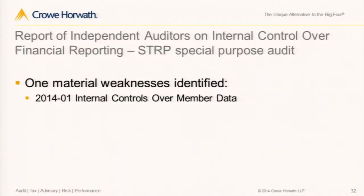There is one more deliverable: because the additional STRIP schedules were audited under government auditing standards, a separate report on internal control over financial reporting is required for those schedules. Many — if not all — of those numbers are derived from the CalSTRS financial statements. Therefore, a material weakness comment appears with respect to these audits as well, as a byproduct of the CalSTRS system audit. There are no previous findings since this is a brand-new engagement.